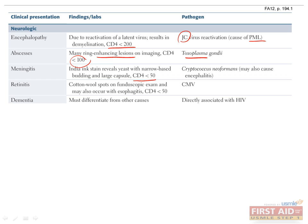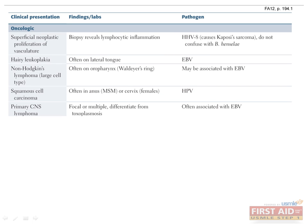CMV retinitis presents as cotton-wool spots on fundoscopic exam at CD4 counts less than 50. HIV-associated dementia can commonly develop and should be suspected first over other forms of mental disease as a cause of neurologic symptoms. Oncologic diseases caused by HIV include HHV-8 causing Kaposi's sarcoma — note its appearance can be confused with Bartonella henselae, and a biopsy confirms the results. Hairy leukoplakia, an adherent white patch on the lateral side of the tongue, is caused by Epstein-Barr virus. Non-Hodgkin's lymphoma, also associated with EBV, can also develop. Squamous cell carcinoma, found in the anus of men who have sex with men or in the cervix in women, is caused by HPV.